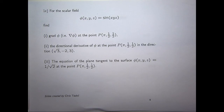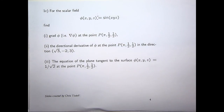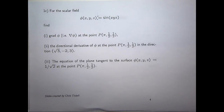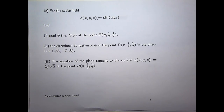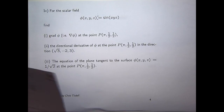Another review type question from Vector Calculus. Here you have a scalar field phi defined as sine of xyz. You're asked to do three things: calculate the gradient, or grad phi, at a point P; calculate the directional derivative at the point P in a particular direction; and also calculate the equation of the tangent plane to the level surface of phi at the point P. We'll work through it step by step.